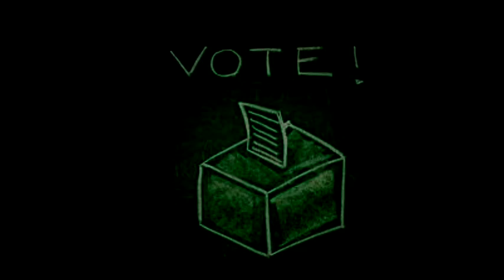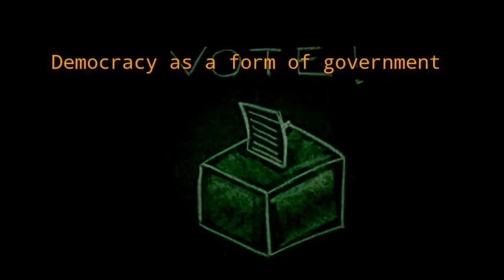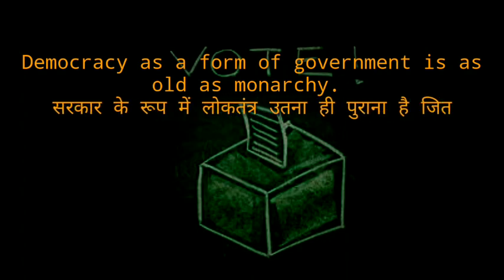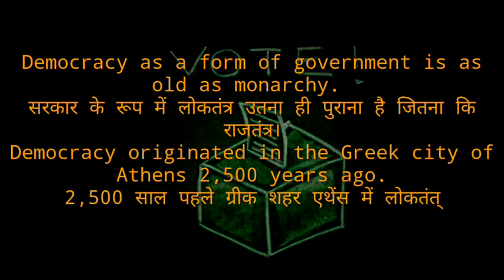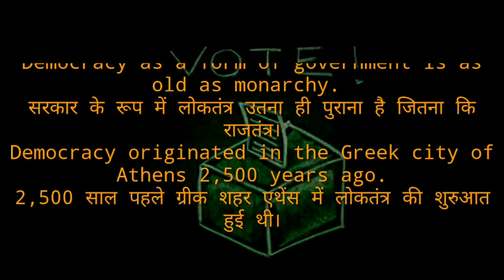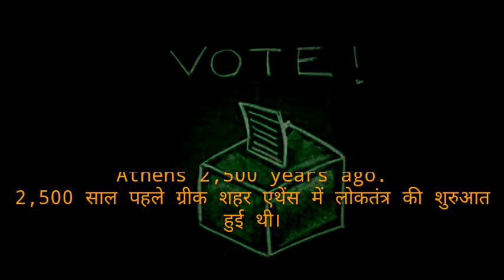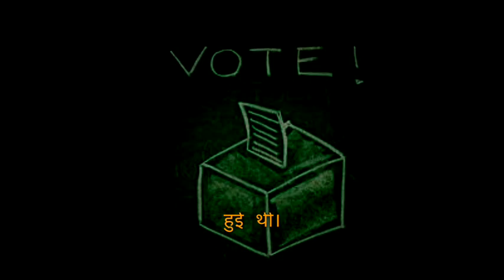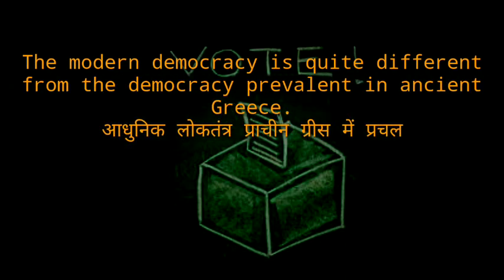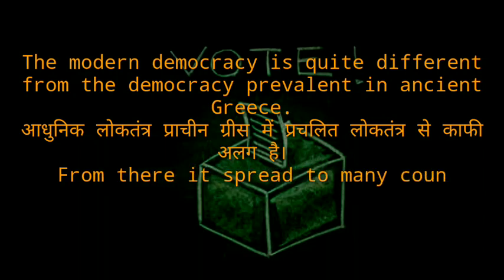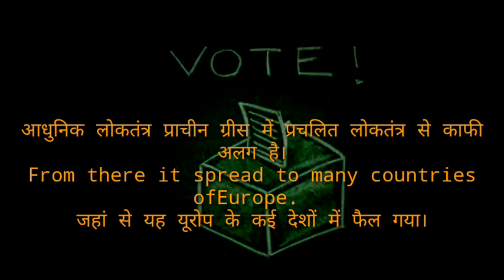Emergence of democracy in modern societies. Democracy as a form of government is as old as monarchy. Democracy originated in the Greek city of Athens 2500 years ago. The modern democracy is quite different from the democracy prevalent in ancient Greece.